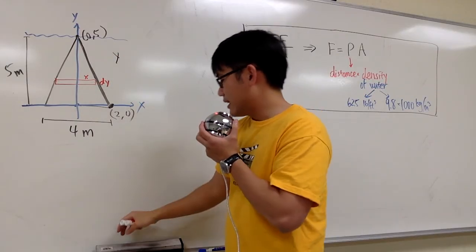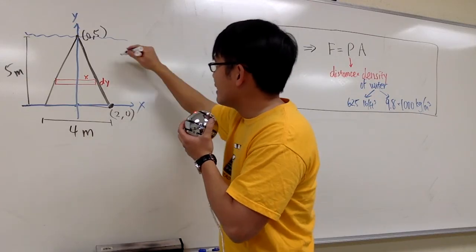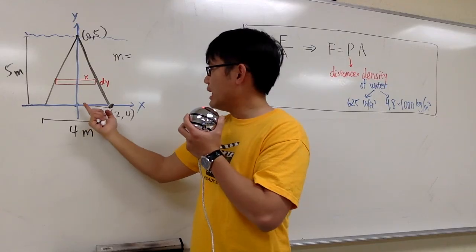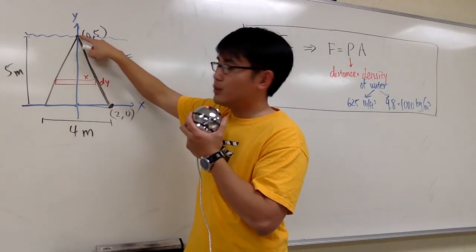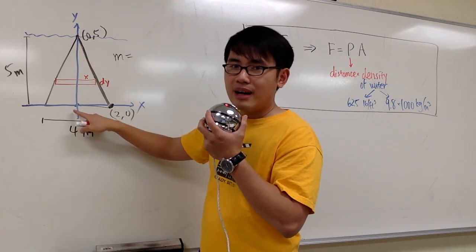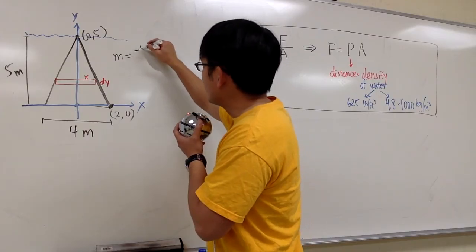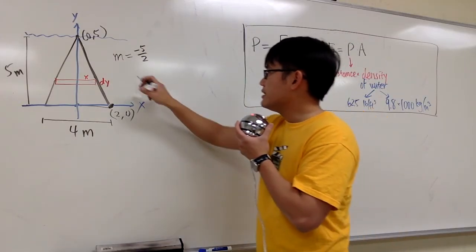Alright, so let's get the slope first. What's the slope of this line? This right here will be the y over x, right? But then, we go down. Look at this right here. We go down 5 units, and then move to the right, 2 units. So, the slope is technically negative 5 over 2.